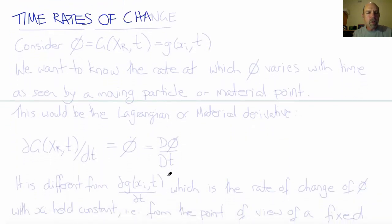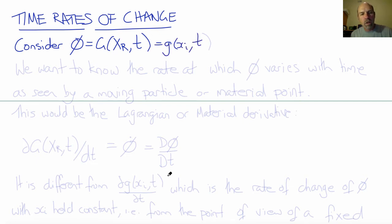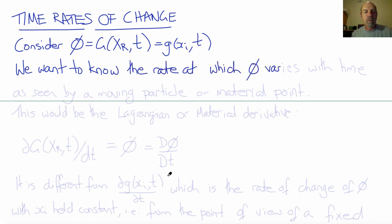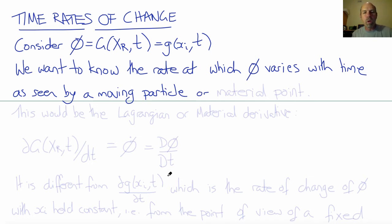Let's consider how we could derive time rates of change in a Lagrangian with respect to an Eulerian state. Consider some scalar variable phi, which is a function G of the material coordinates and a function g of the spatial coordinates. We want to know the rate at which phi varies with time as seen by the moving particle or the material point. This is the Lagrangian description of the time rate of change, called the Lagrangian or material derivative.